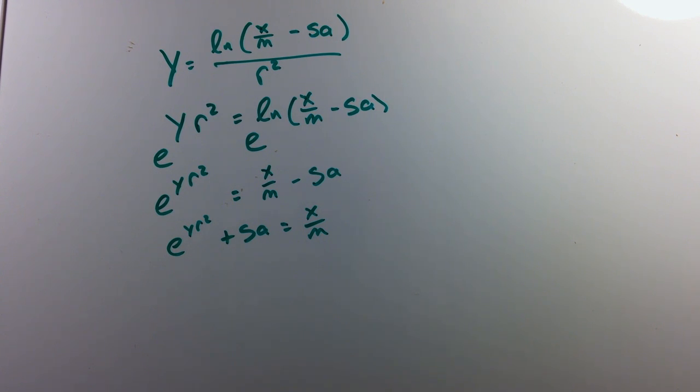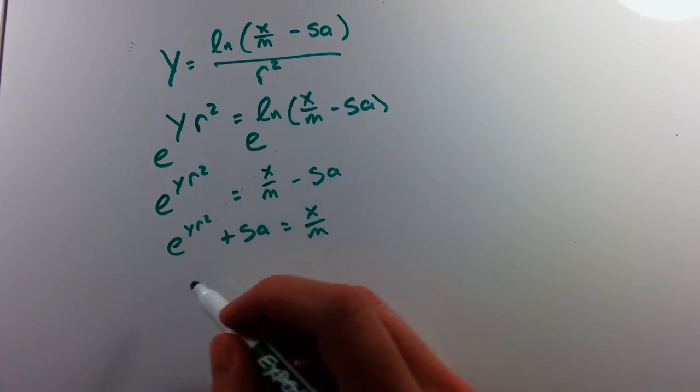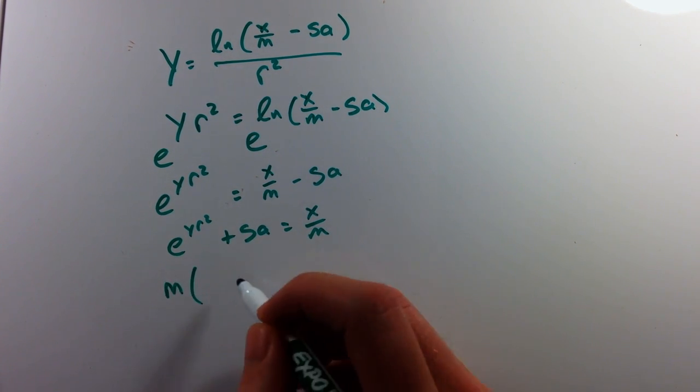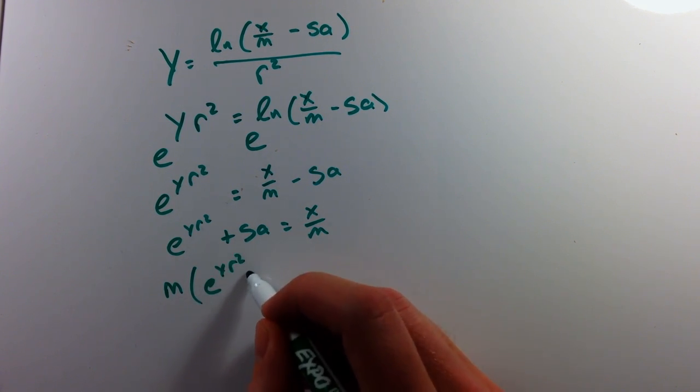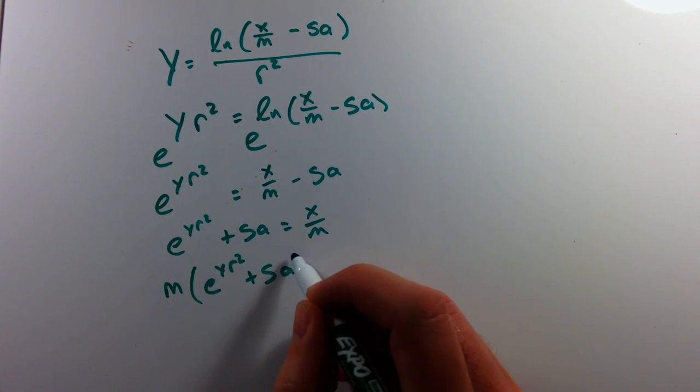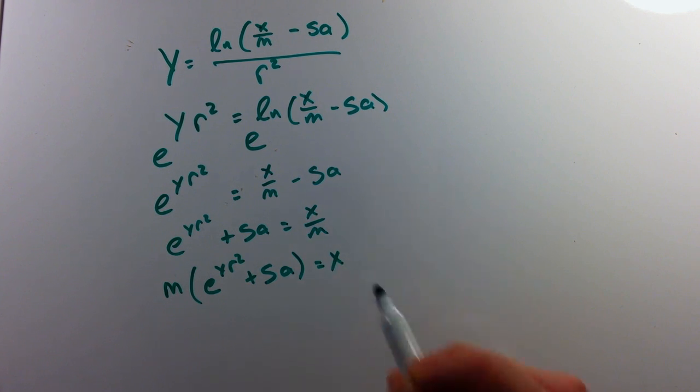And then here's the little tricky part. We can multiply both sides by m, but when we multiply both sides by m, a rule of mathematics says we multiply everything on the left-hand side by m. So we have m times e to the y r squared plus s times a equals x.